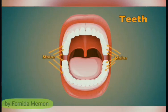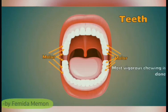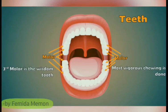Molar: Behind the premolars are the molars. There are three sets of molars in each jaw, making twelve molars in all. Most vigorous chewing is done here. They are named as first, second and third molar. The third molar is called the wisdom tooth.